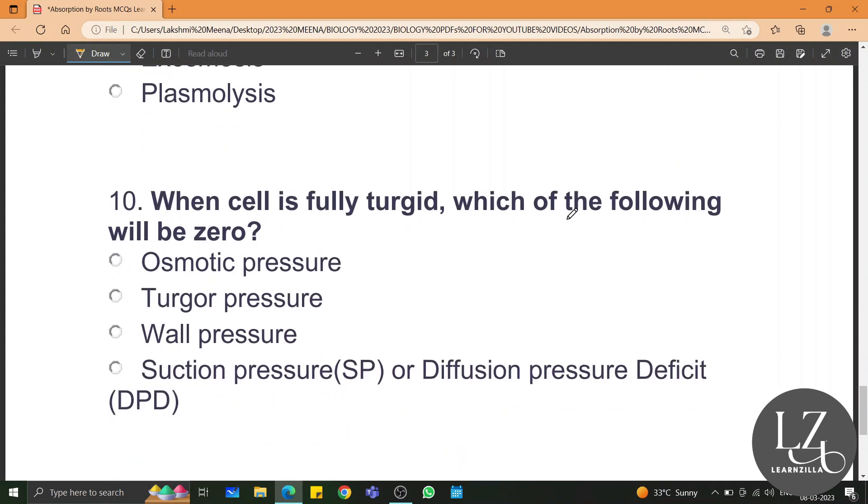When cell is fully turgid, which of the following will be zero? Answer is D, that is suction pressure will be zero.